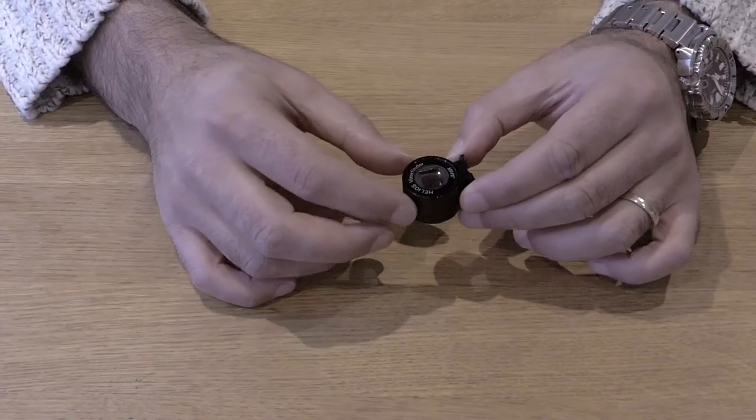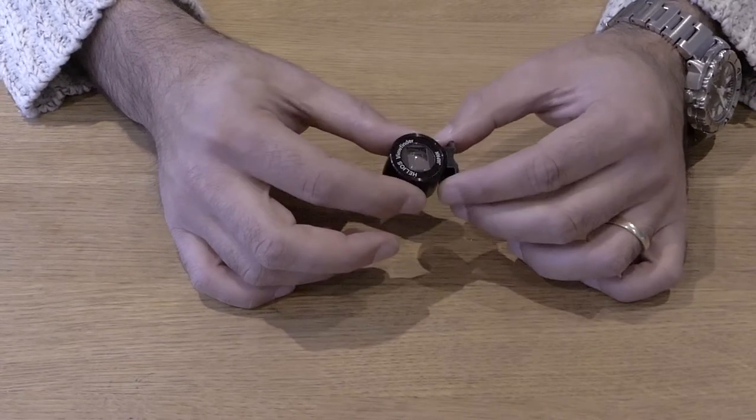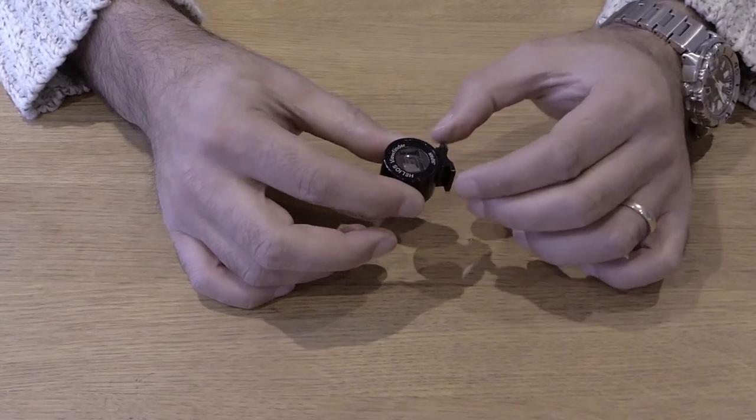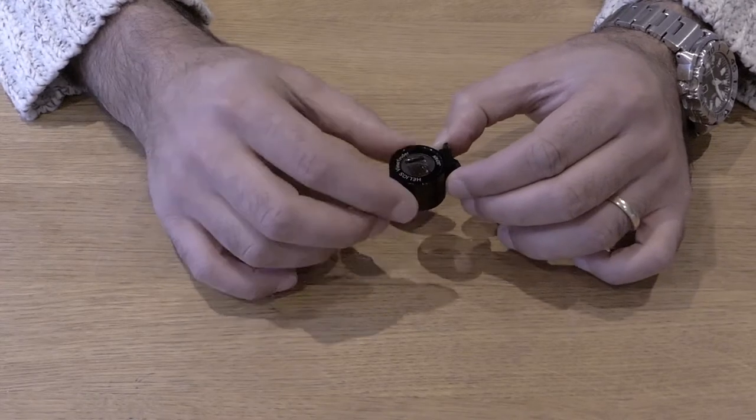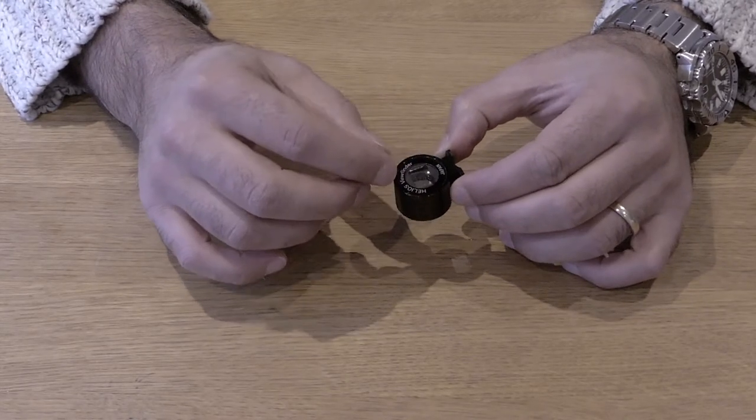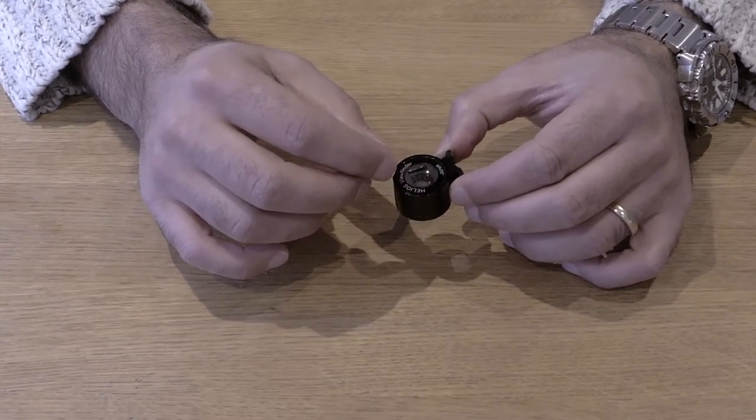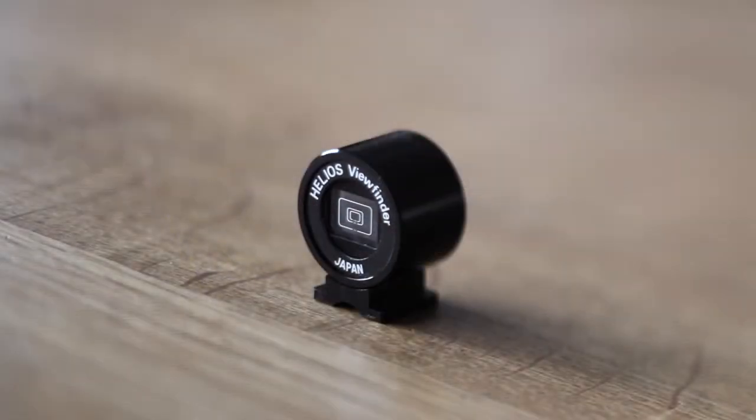The nice thing about the Helios is that it's very small, it's tiny. It fits on the hot shoe a little better, and you've got three bright lines in here. I think you've got 35, 85, and 135. I can just turn it to the camera like that.